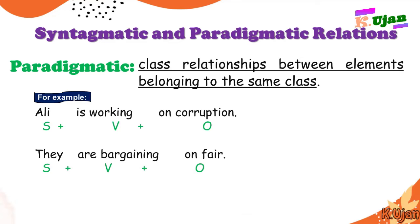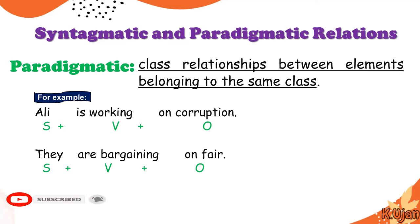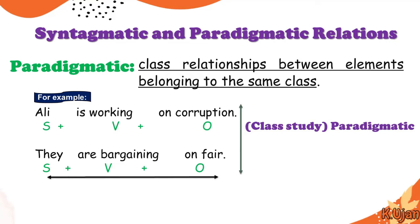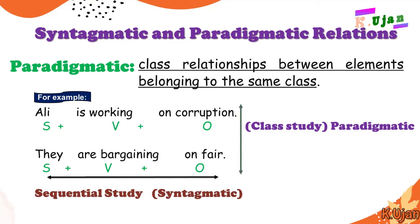So instead of 'they,' we could say 'he' or another name. Instead of one verb, we could use other verbs like 'are bargaining' or 'are working.' And in the place of object, we put only objects like 'on corruption' or 'on fear.' So this is known as class study — every class takes the place of another class. Class study is known as paradigmatic relations, and sequential study of language in grammar is known as syntagmatic relations in linguistics.